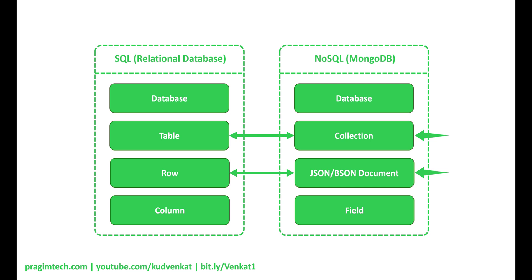At the end of the day, MongoDB is a database and we use it to store data. In a relational database like SQL Server, data is stored in a table in rows and columns. In MongoDB, we do not have tables — instead we have documents. Data in MongoDB is stored in BSON documents. BSON is binary JSON. So first, let's understand what JSON is.